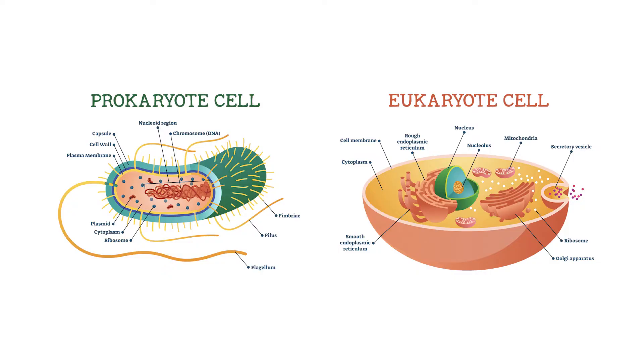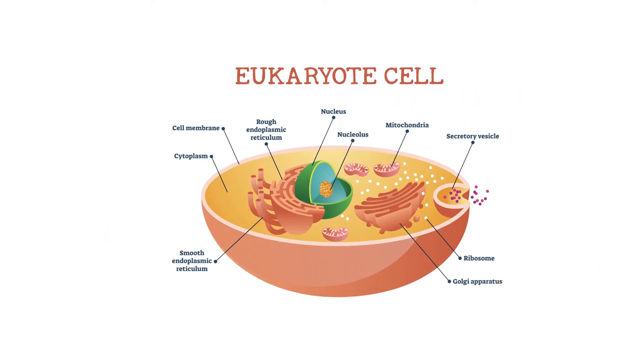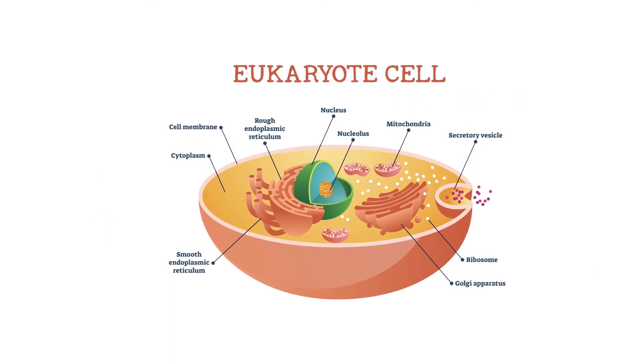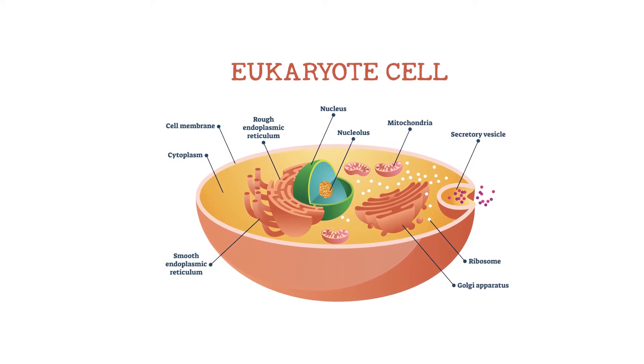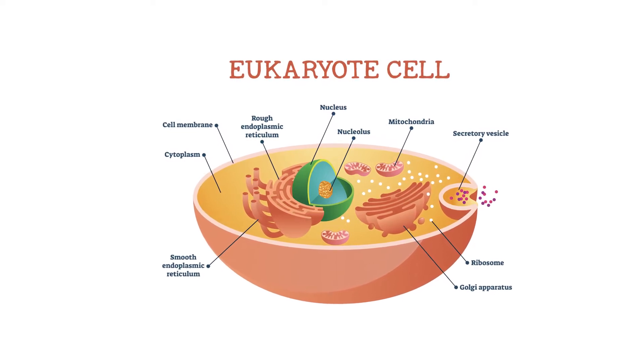There are two defining types of cells on Earth, prokaryote and eukaryote. The main difference between these two types of cells is that eukaryotic cells have specialized organelles, including a membrane-bound nucleus.